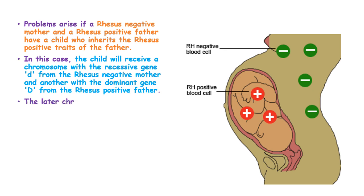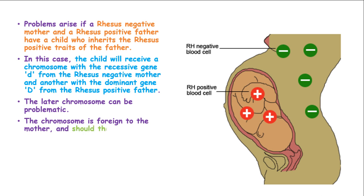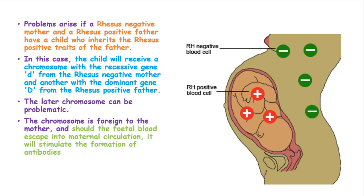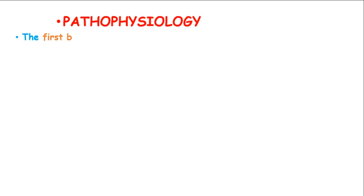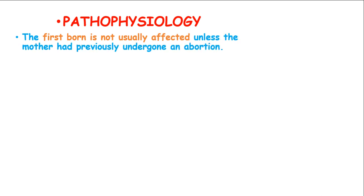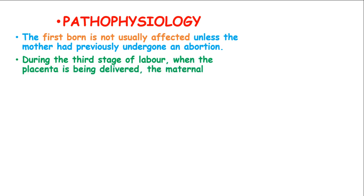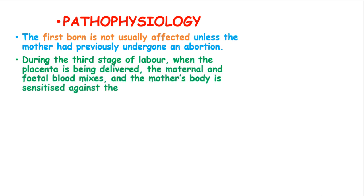The latter chromosome can be very problematic. The chromosome is foreign to the mother, and should blood from the fetus escape into the maternal circulation, it will stimulate the formation of antibodies by the mother. During the third stage of labor, when the placenta is being delivered, the maternal and fetal blood mixes and the mother's body is sensitized against the baby's blood.